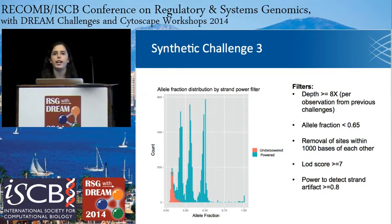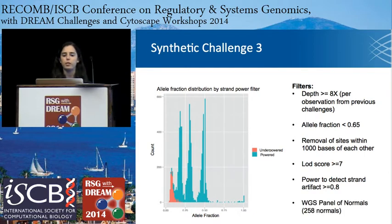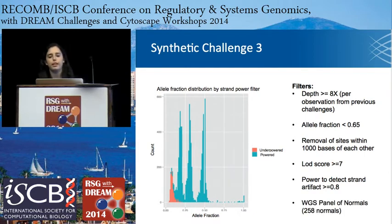Additionally, we applied another panel of normals beyond what MuTect stock was applying — 258 full genome samples for a panel of normals. This brought our balanced accuracy up to around 95%.